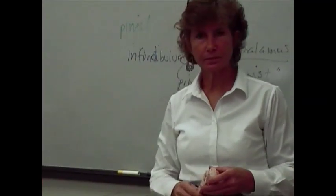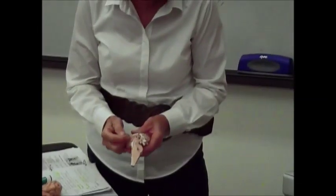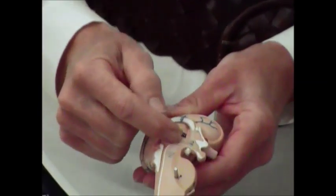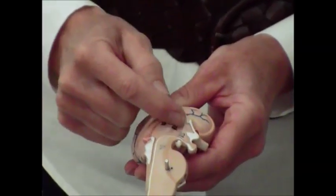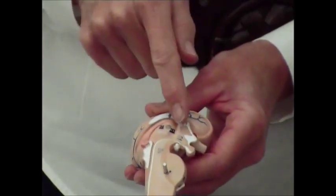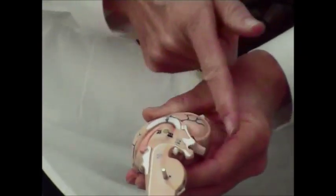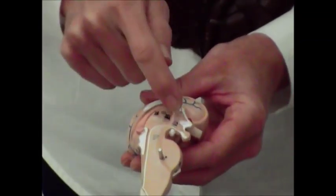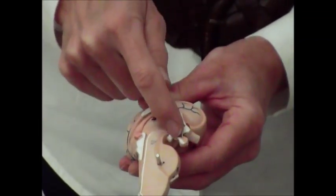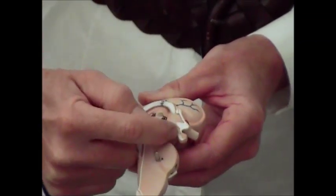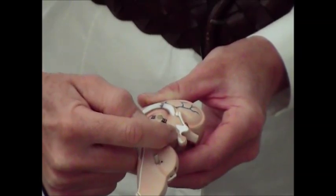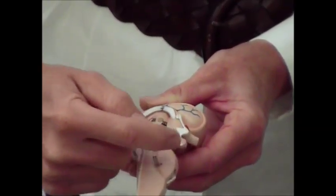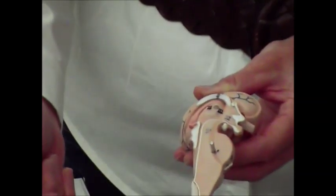On the model, you've got the pineal with a little tail going into the area right around the thalamus. On the anterior side of the thalamus, you've got the W-shaped hypothalamus, and then hanging off the hypothalamus you have the infundibulum, which has the little ball called the pituitary gland.